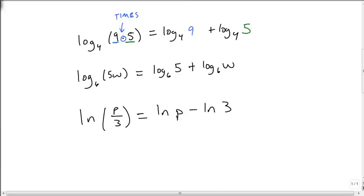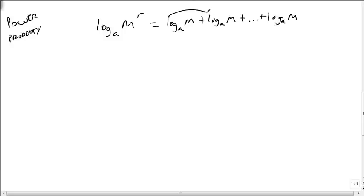And so this is using these simple properties. But we've got one more property, and this is the power property of logarithms. And it says, if we have log base a of m to the r, well, remember that this power means that we've got the repeated m being multiplied together. And using the product property that we talked about earlier, this could be log base a of m plus log base a of m plus dot dot dot plus log base a of m. So there are r of these log base a of m's being added together.